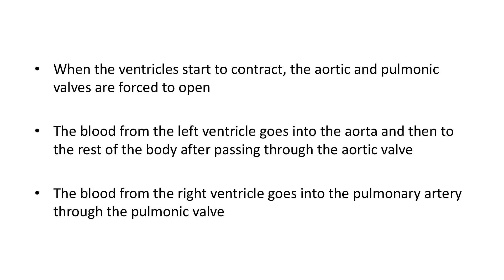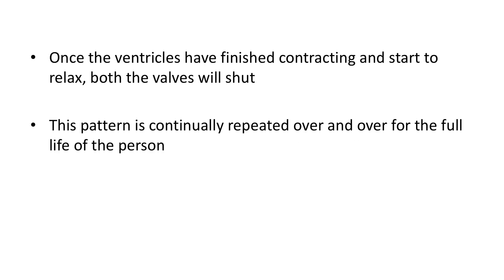The blood from the right ventricle goes into the pulmonary artery through the pulmonic valve. Once the ventricles have finished contracting and start to relax, both the valves shut, preventing any blood from flowing back. This pattern is continually repeated over and over for the full life of the person.